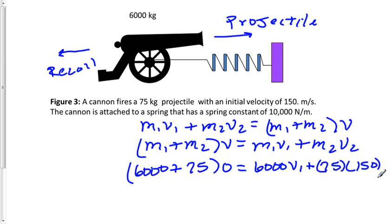150 is the velocity of the projectile. So now this is a conservation of momentum question, even though inelastic. So V1 then equals negative 1.9 meters per second.